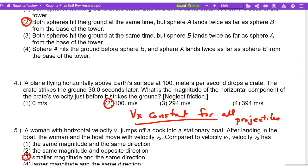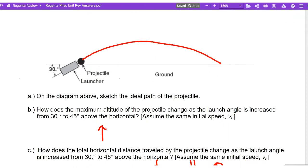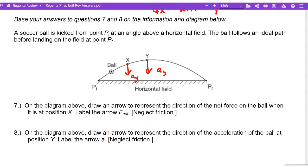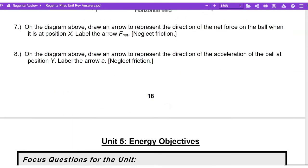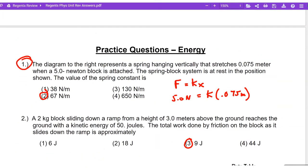Okay, know that Vx is constant for all projectiles. All right, this is a parabolic path for a projectile. What else? Acceleration due to gravity is always straight down. Acceleration due to gravity is always straight down. So is the force of gravity.